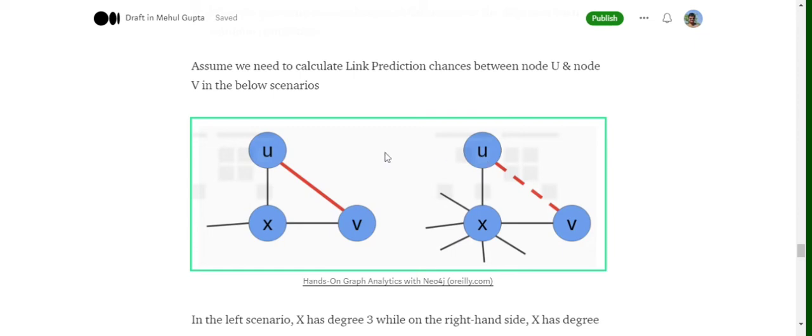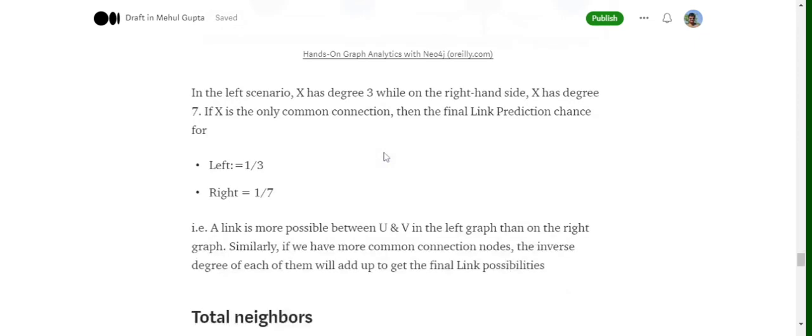Now if they would have multiple common nodes, we would have summed them also. It would be more like 1 over log(3) plus 1 over log(7). So degree of 1 over log(degree) of all the connections that are common between the two nodes. And as we are doing a reciprocal, so eventually any node with a lower degree would be given higher priority in the formula.